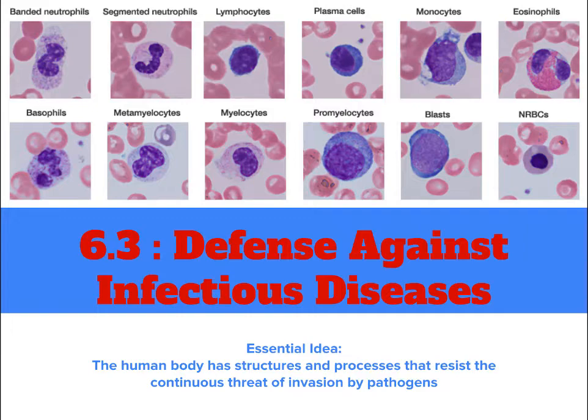Even today, many people die due to infectious diseases. In 6.2, we learned about the incredible ticking machine called the heart and the blood system. 6.3 is a natural follow-up to that topic. Our bodies are incredibly adapted to fight off diseases and infections. Bacteria, viruses, parasites, and fungi can all make us sick. Our bodies are programmed to fight back.